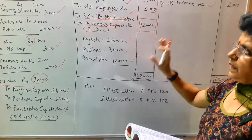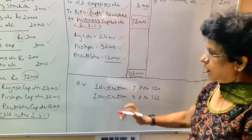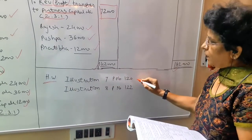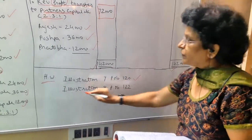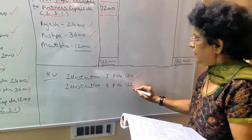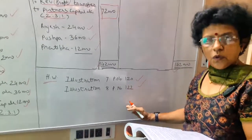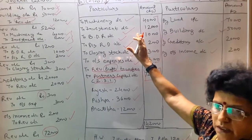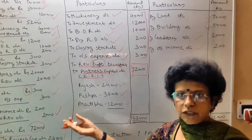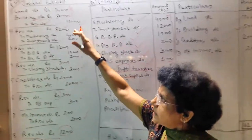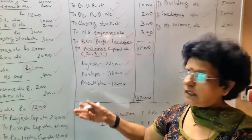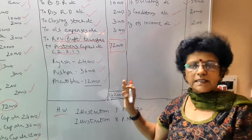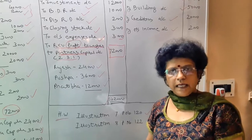Your homework for the day: Illustration 7 on page number 120 and Illustration 8 on page number 122 — you have to do these. Tomorrow we will be doing revaluation along with the balance sheet. Journal entries we have learned today, so in tomorrow's portion, the revaluation along with the balance sheet example we will be doing. Have a nice day.